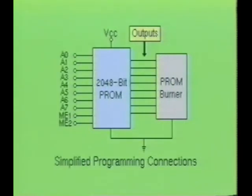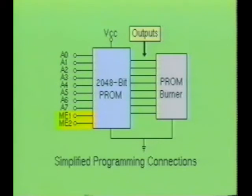Here you see the PROM burner connected to a typical programmable read-only memory device. As you will notice, the PROM burner was connected to the outputs of the PROM device. Also notice that there are two memory-enabled inputs on this device — one is labeled ME1 and the other is labeled ME2. When the PROM is being programmed, either ME1 or ME2, or in some situations both ME1 and ME2, must be brought high.